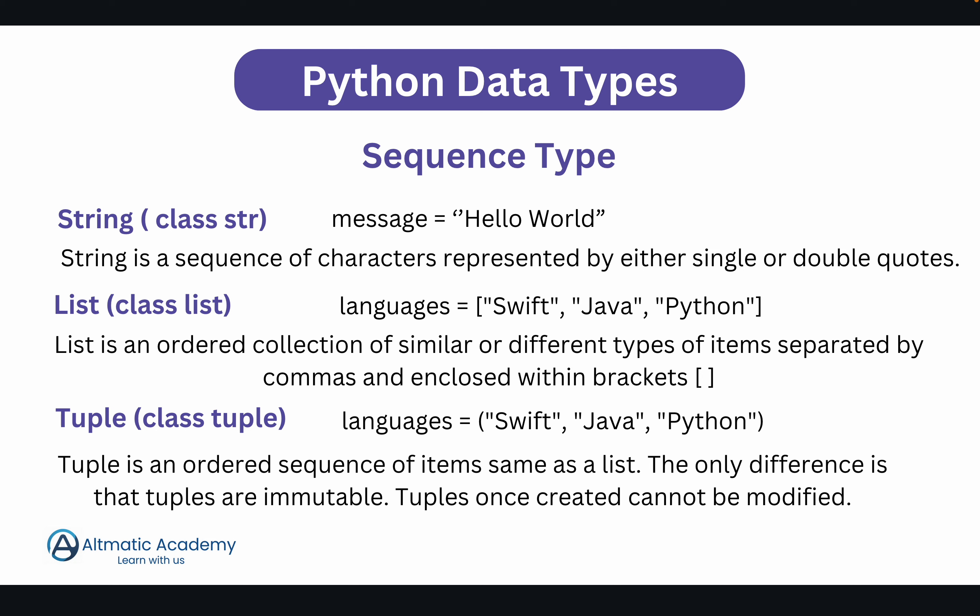Third is tuple. Python's class for tuple data type is tuple. The same example used for list — three languages Swift, Java, Python — but enclosed in parentheses (smaller brackets). Values separated by comma in parentheses form a tuple. A tuple is an ordered sequence of items, same as list, but the only difference is tuples are immutable. Immutable means the value at a particular position cannot be changed — once a tuple is created it cannot be modified.